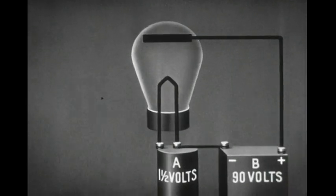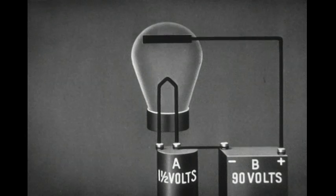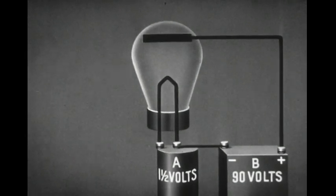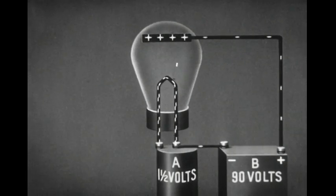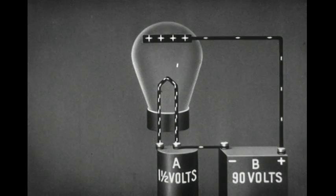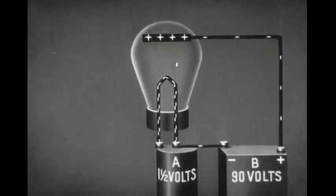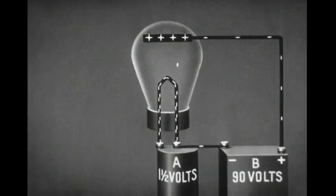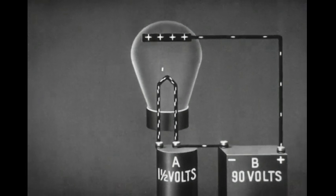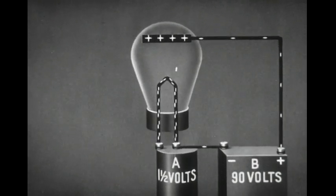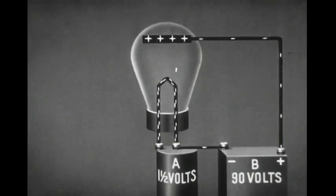The plate is connected to the positive side of a high-voltage battery. Since the plate has a positive charge with respect to the filament, electrons are attracted to the plate. A stream of electrons flows from the filament to the plate inside the tube, to the battery, and back to the filament. This is the plate circuit.